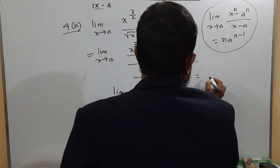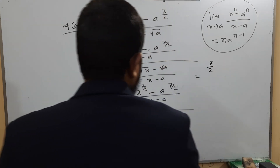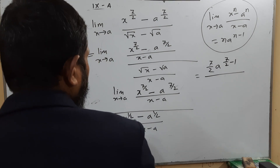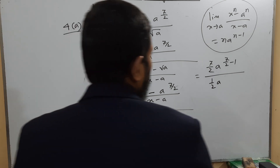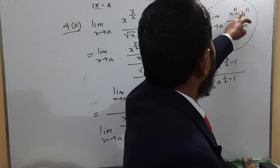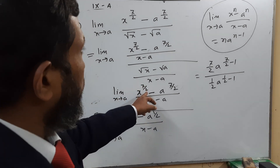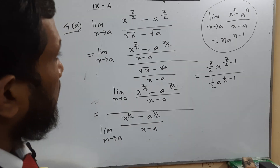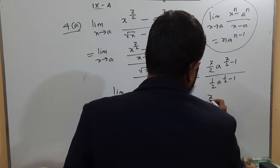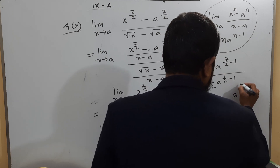So the expression becomes [(7/2)·a^(7/2 − 1)] / [(1/2)·a^(1/2 − 1)] = [(7/2)·a^(5/2)] / [(1/2)·a^(−1/2)]. Dividing: (7/2) ÷ (1/2) = 7, and applying exponential rules: a^(5/2) / a^(−1/2) = a^(5/2 + 1/2) = a^(6/2) = a^3. Wait — combining: 7·a^(5/2 − (−1/2)) = 7·a^(5/2 + 1/2) = 7·a^3.